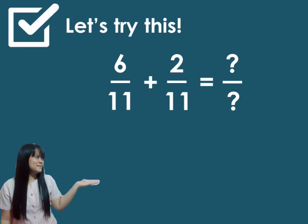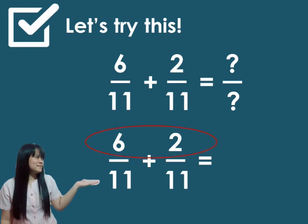How about 6 over 11 plus 2 over 11? Let us look at the numerator. 6 plus 2, and 11. The answer will be 8 over 11. Since 8 over 11 can't be simplified, therefore, the answer will be 8 over 11.